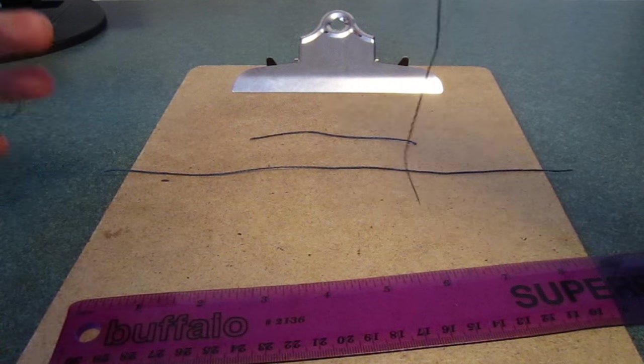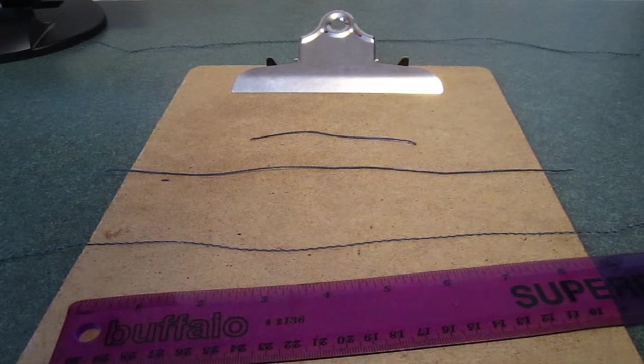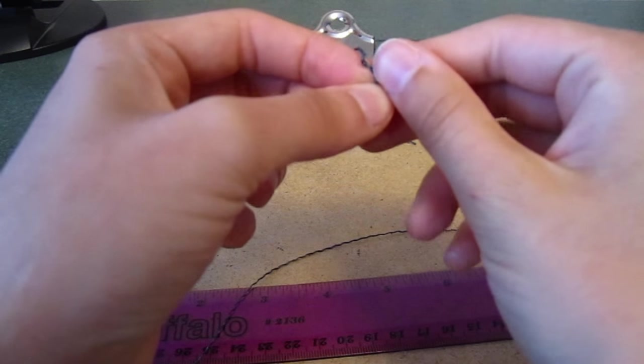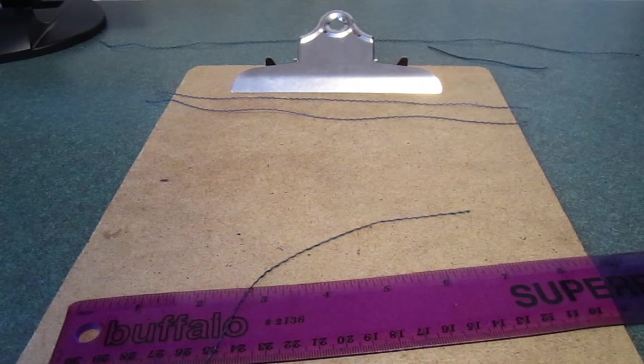You will only need one half of the 18 inch strands for this project, so you can set the other aside to make another bracelet later. I did the same thing to the 12 inch strand and set the 4 inch strand aside for later use.